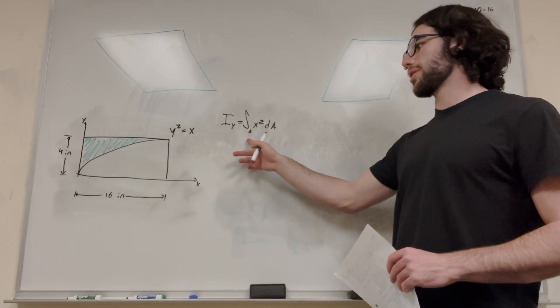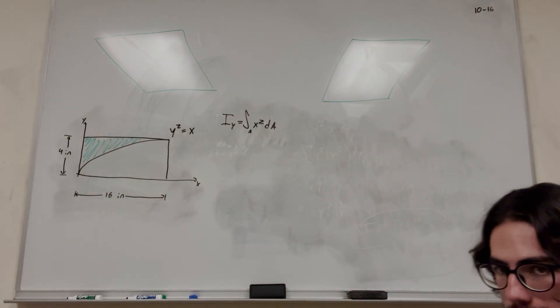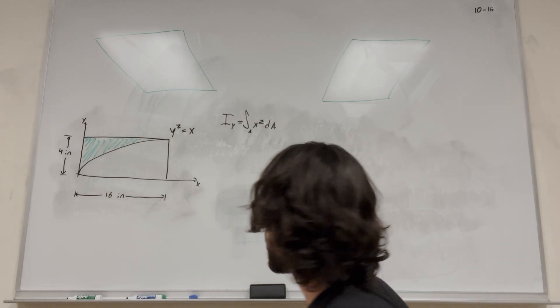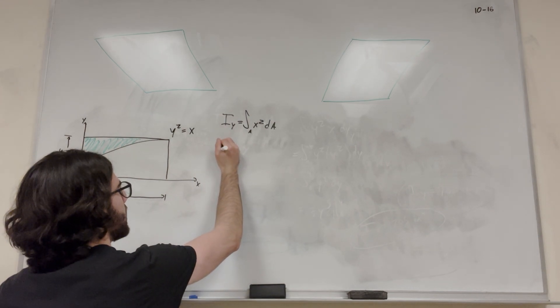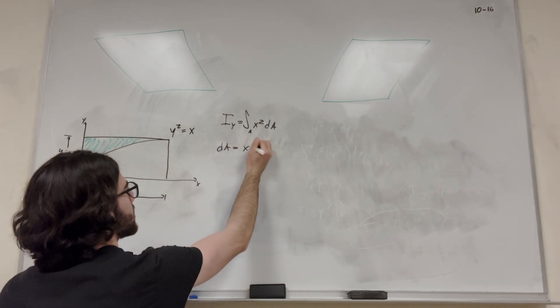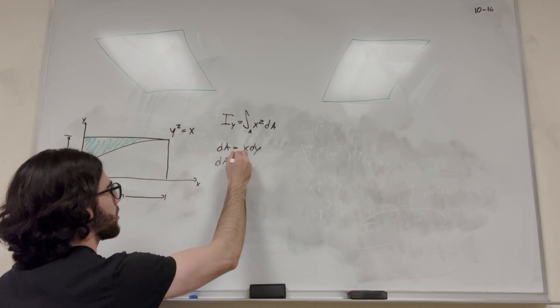We have this formula: I_y equals the integral over the area times x squared dA. What we need to do is put this in terms of one unit. We have dA here. You can't integrate with respect to dA necessarily. We know that dA equals x dy, or dA equals y dx.